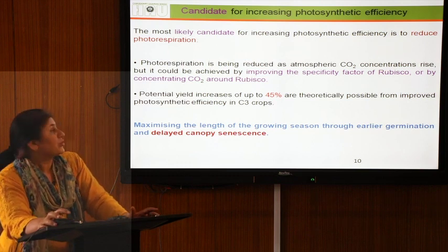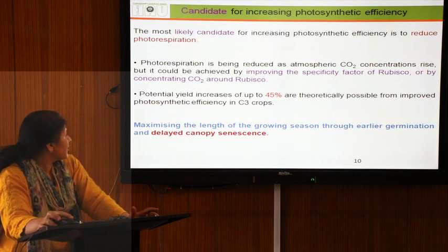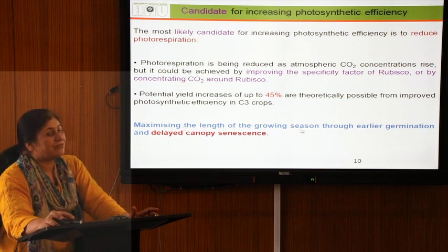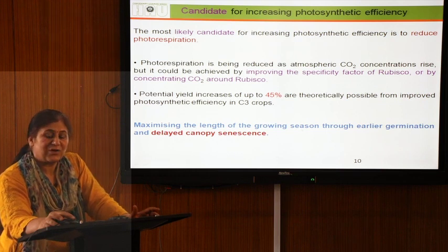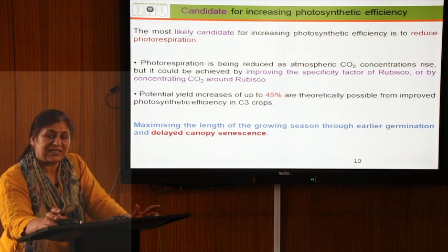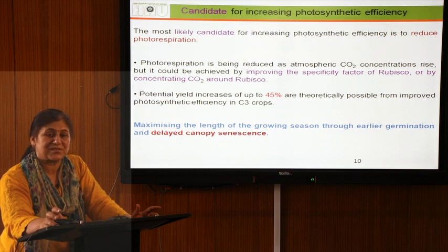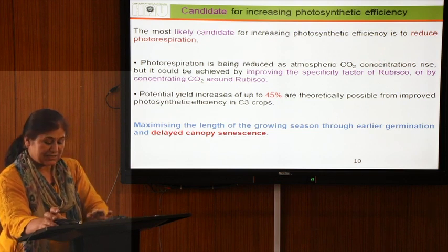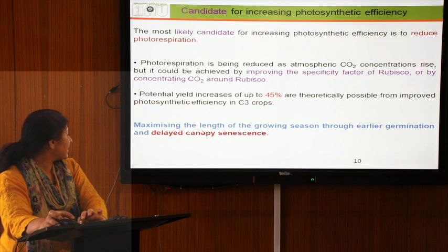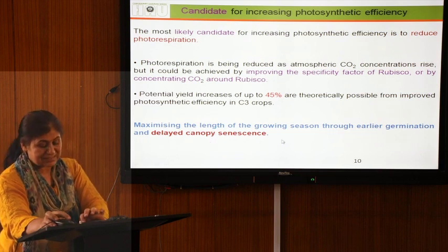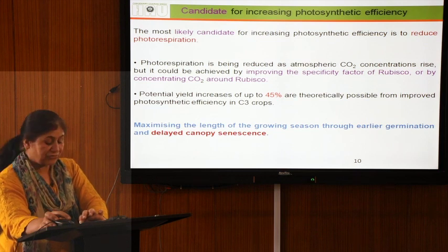Other important candidates for improving photosynthesis include reducing photorespiration, which is critically important, and maximizing the length of the growing season. Growing season length can be extended through early sowing and by selecting varieties that show delayed senescence, thereby extending the crop's photosynthetically active period — earlier germination and delayed canopy senescence can significantly enhance photosynthetic capacity.